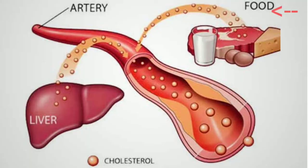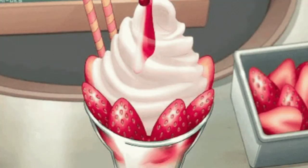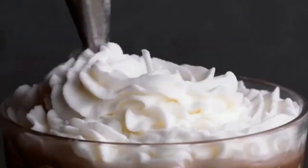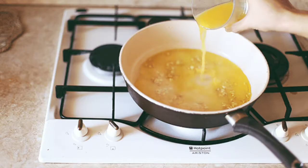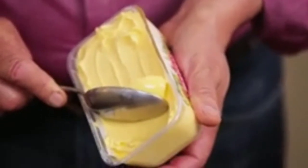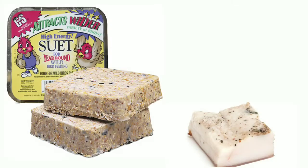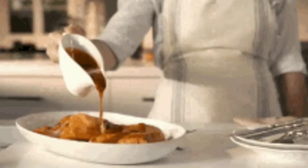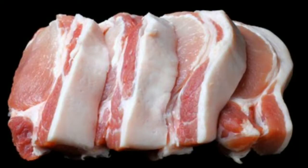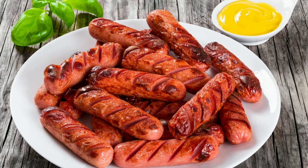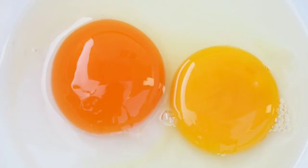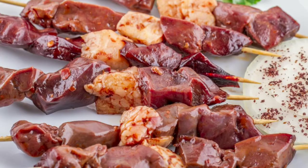Cholesterol can also be obtained from the food that you eat, and it is only found in foods that come from animals. Examples include milk, cheese, yogurt, cream, animal fats such as butter, ghee, margarine and sprays made from animal fats, blood, sweat and dripping, fatty meat and processed meat products such as sausages, egg yolks, shrimps, and organ meats.